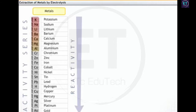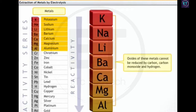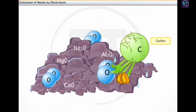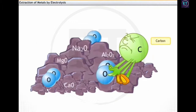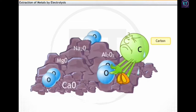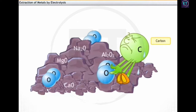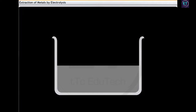The metals high up in the activity series are very reactive. Hence, they cannot be obtained from their compounds by heating with common reducing agents like carbon, carbon monoxide, and hydrogen. For example, a reducing agent like carbon cannot reduce the oxides of metals like sodium, magnesium, calcium, and aluminium, because they have more affinity for oxygen than carbon. Therefore, these metals are refined by another method known as electrolysis.